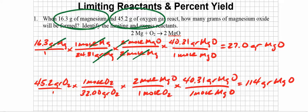Now we've got moles of magnesium oxide. What we need to do is convert that to grams of magnesium oxide by adding up the atomic masses for magnesium and oxygen. When I add those up, I get 40.31 grams of magnesium oxide per mole. That cancels the mole unit. I'll multiply 16.3 by 40.31 and divide by 24.31, and I get 27.0 grams of magnesium oxide. But before you write that down as the product, remember we've only tested one of the two reactants — we've only tested magnesium.